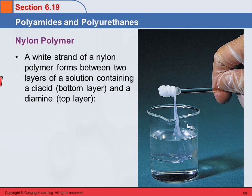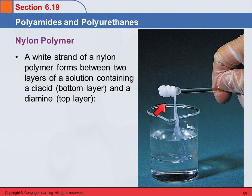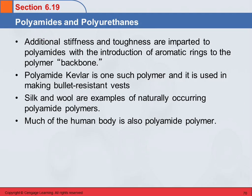You did this in the lab last week. A white strand of nylon polymer forms between two layers of a solution containing a diacid and a diamine. You can just pick this up with a stirring rod and spool it out, and it makes nylon — it's really pretty cool.